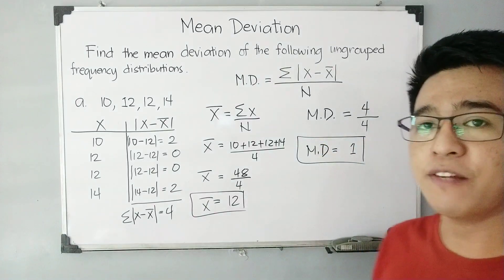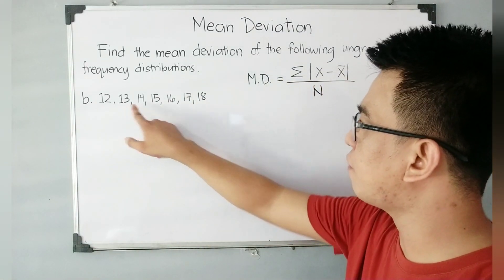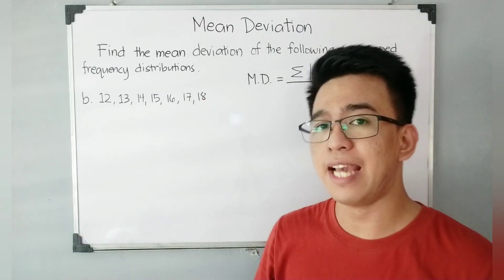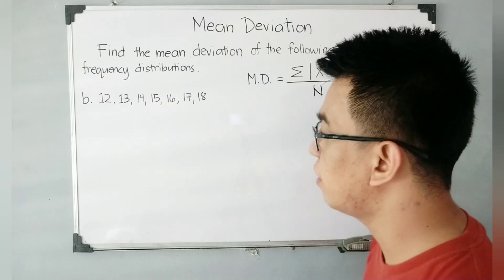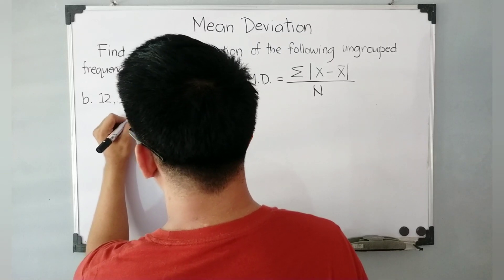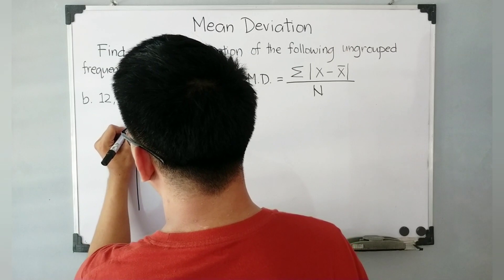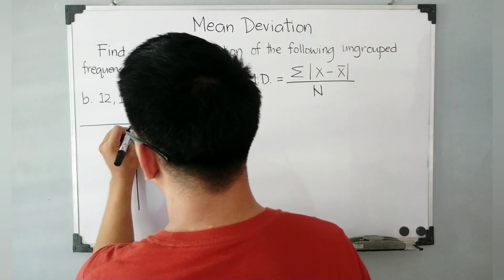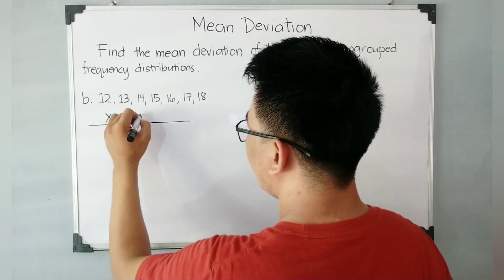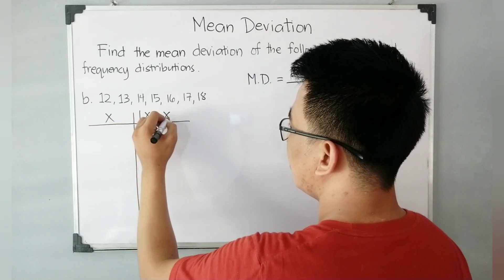That's it for the first example. Now let us solve the second problem: the data set is 12, 13, 14, 15, 16, 17, and 18. We are asked to find the mean deviation. First, create a two-column table — the first column is for the scores (x), and the second column is for the absolute value of x minus x-bar.